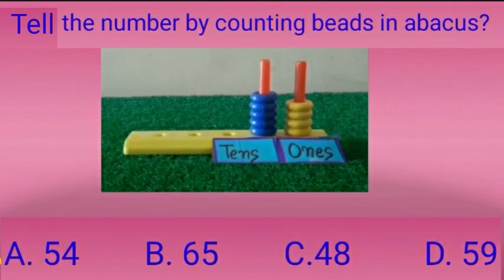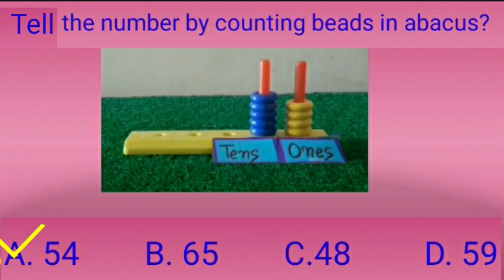Now we will solve a practice question. Tell the number by counting beads in the Abacus. See kids, in this picture there are some beads in the roads of Abacus. You will count the beads and tell me the number. Let's count. Firstly, we will count the beads in the 10's road: 1, 2, 3, 4, 5. There are 5 beads in the 10's road. Now count the beads in the 1's road: 1, 2, 3, 4. There are 4 beads in the 1's road. What number is it? Yes, it is number 54. The right answer is option A, 54.